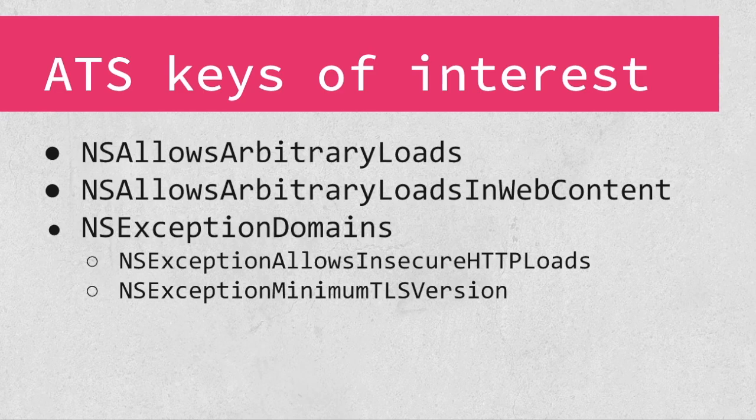Finally, we have NS Exception Domains. This allows a custom ATS configuration to be set for a domain. This can allow an app to have full ATS protections on its own endpoints while disabling ATS for third-party endpoints, for example. Two keys to watch for in exception dictionaries are NS Exception Allows Insecure HTTP Loads, which allows unencrypted HTTP connections, and NS Exception Minimum TLS Version, which permits a server to use a less secure version of TLS.